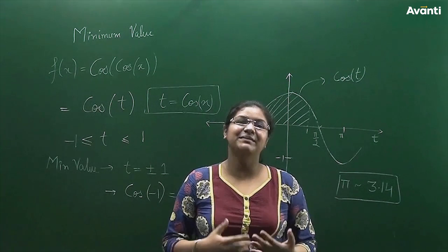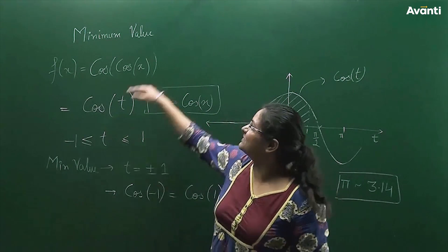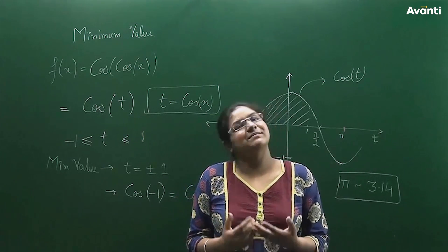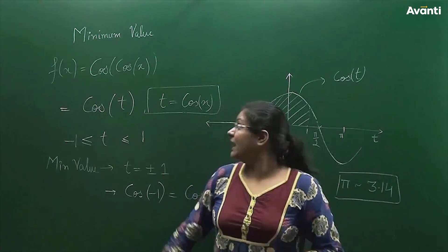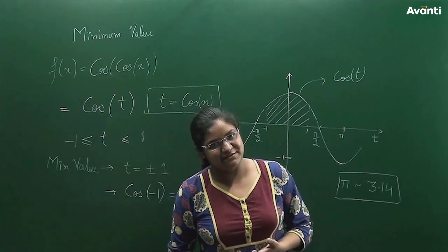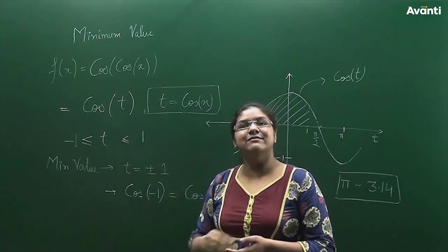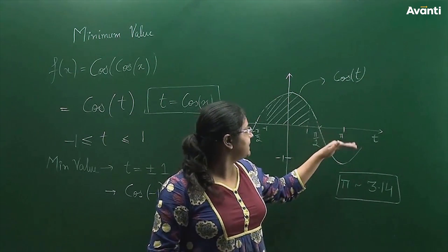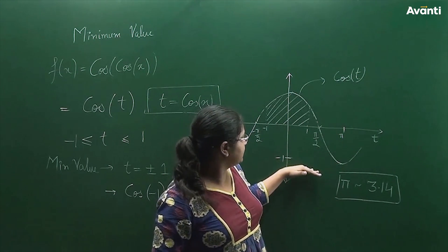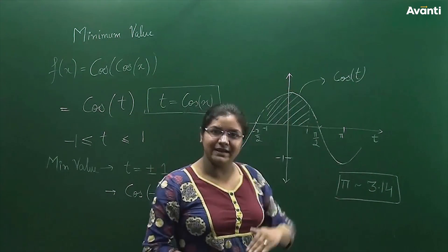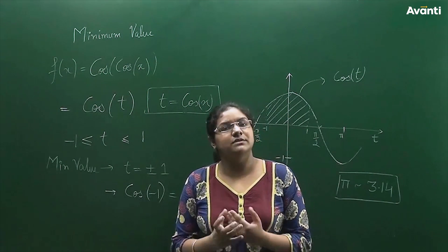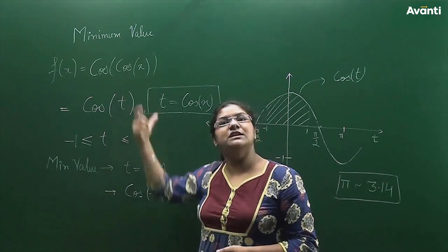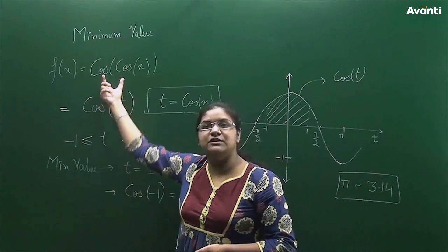Hello everyone. In this question, we have a trigonometric function: cos(cos x), and we want to find its minimum value. Before finding the minimum, let's analyze it. There is a cosine function inside another cosine function. As x varies, the inner cos x takes all values from −1 to 1. The range of the inner function becomes the domain for the outer cosine.